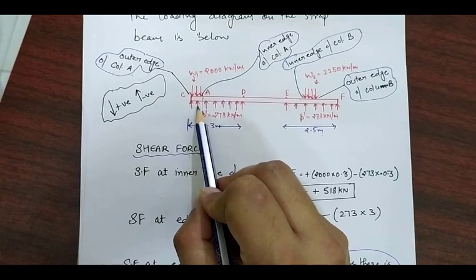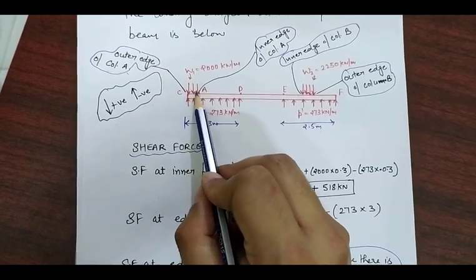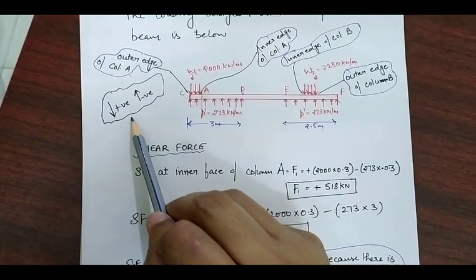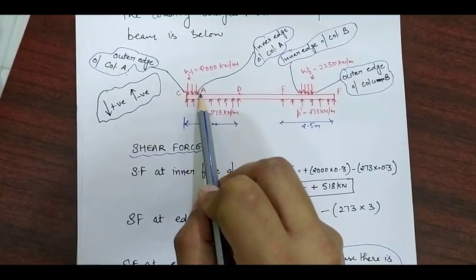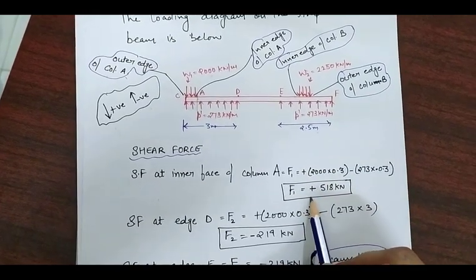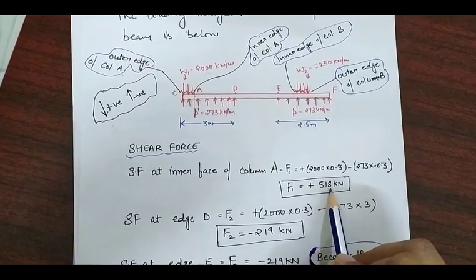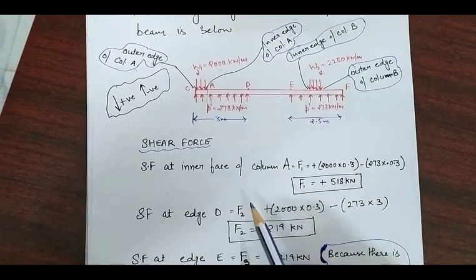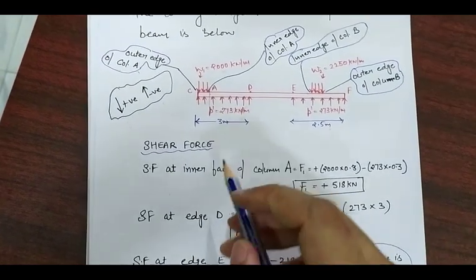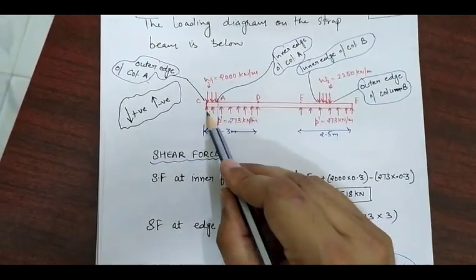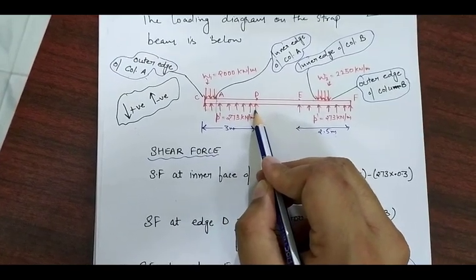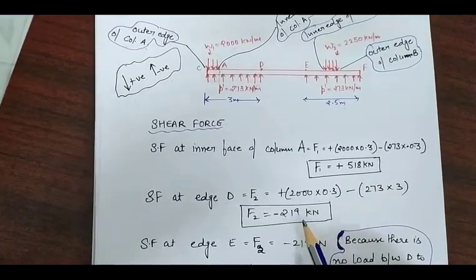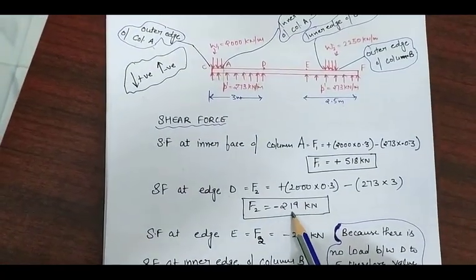Up to the inner face of column A, there is the upward soil pressure UDL (taken as negative) and the downward UDL w1 (taken as positive). The resulting shear force F1 at the inner face of column A is positive 518 kilonewton. At edge D, considering total upward soil pressure minus the downward pressure, the shear force calculates to minus 219 kilonewton.